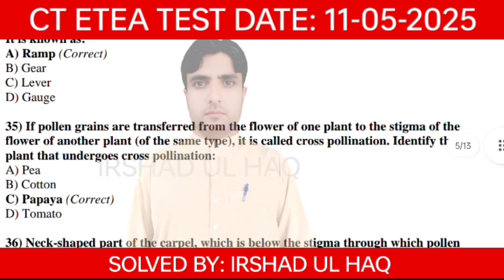Question number 20. If pollen grains are transferred from the flower of one plant to the stigma of another flower of the same type, it is called cross pollination. Option number C: Papaya.